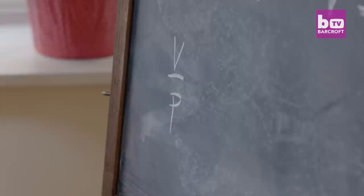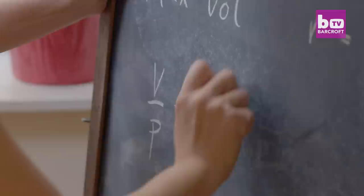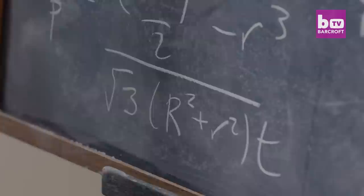So the ratio of the mince to the pastry is V divided by P.